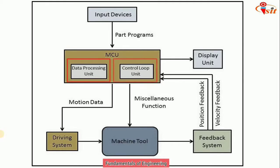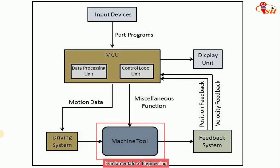The other part is the CLU (Control Loop Unit), which is responsible for operating various drives, receiving feedback from the result, and monitoring the same. The MCU gives signals through pulses for executing different types of motion by the respective motors. These motions are transferred to the driving system, where servo motors or stepper motors act and the feed rate and spindle speed are controlled.